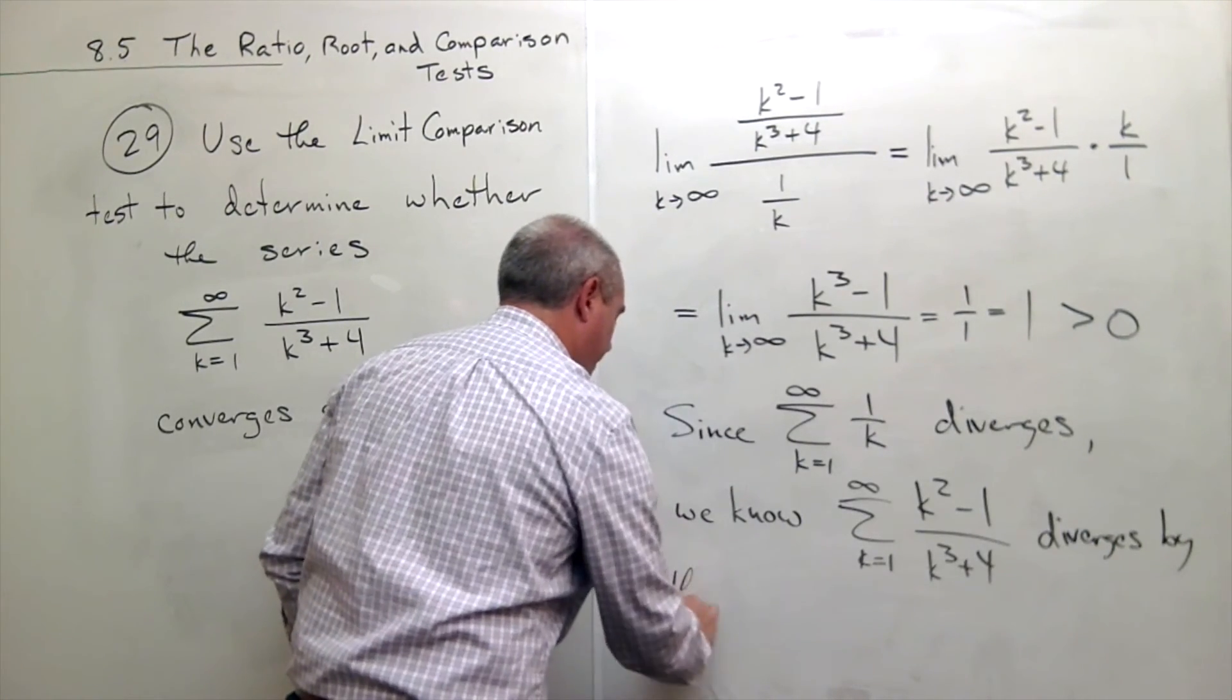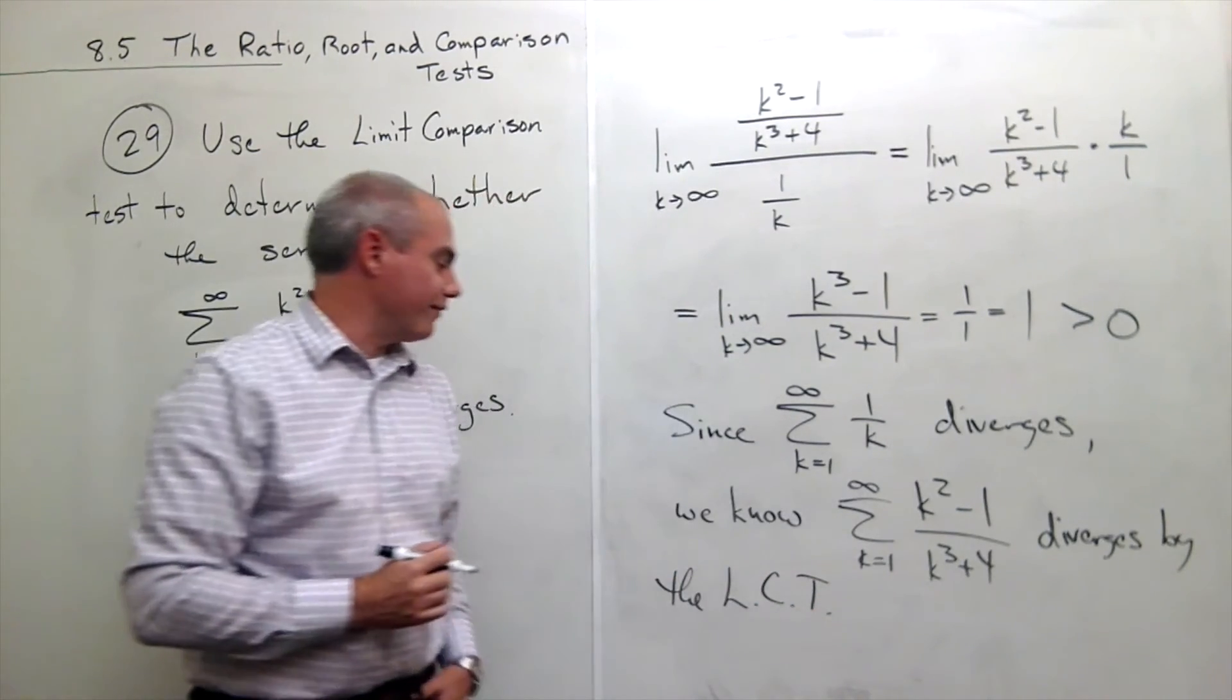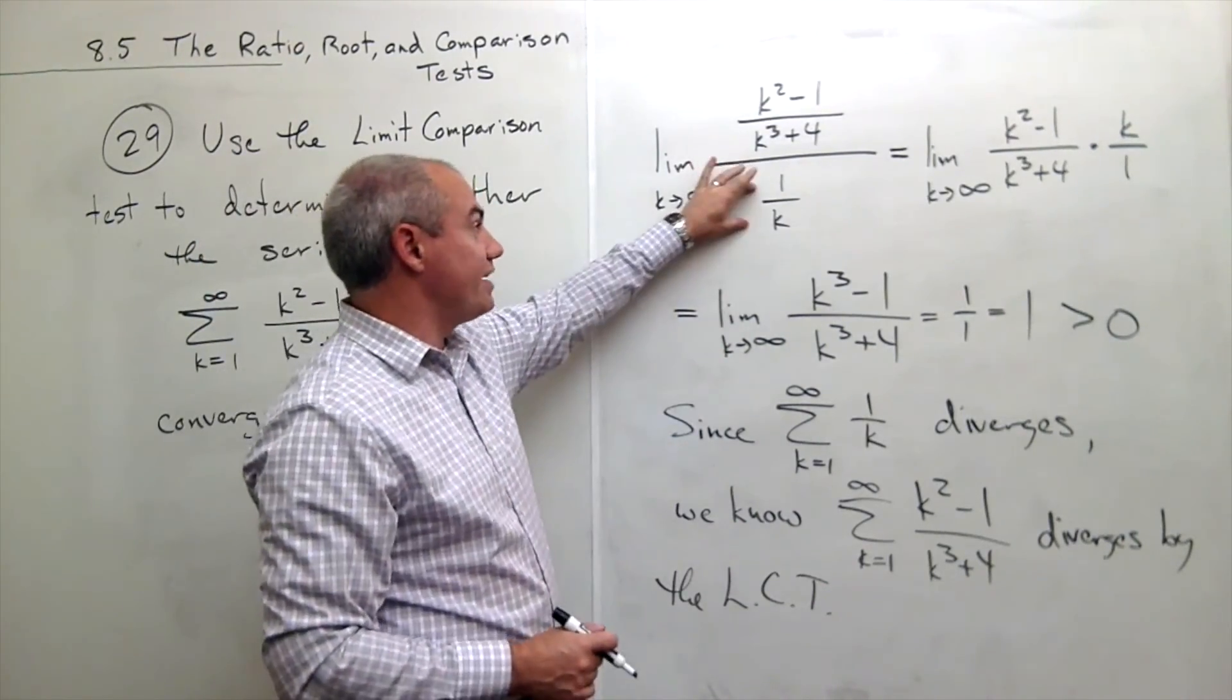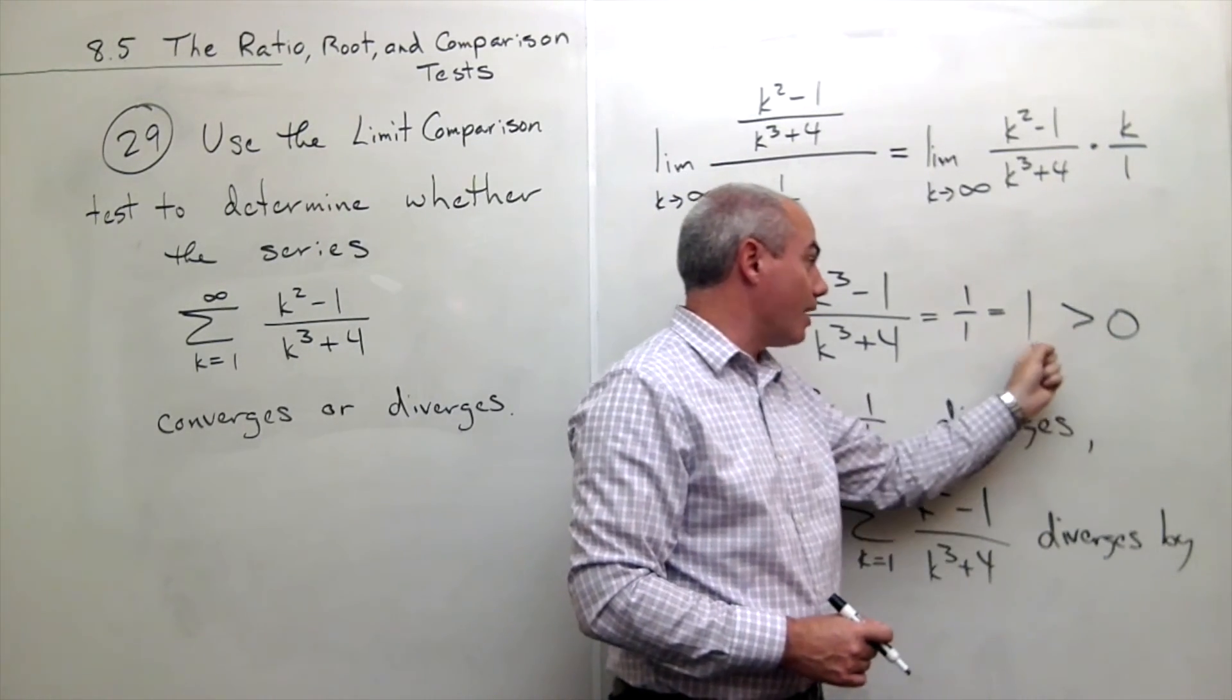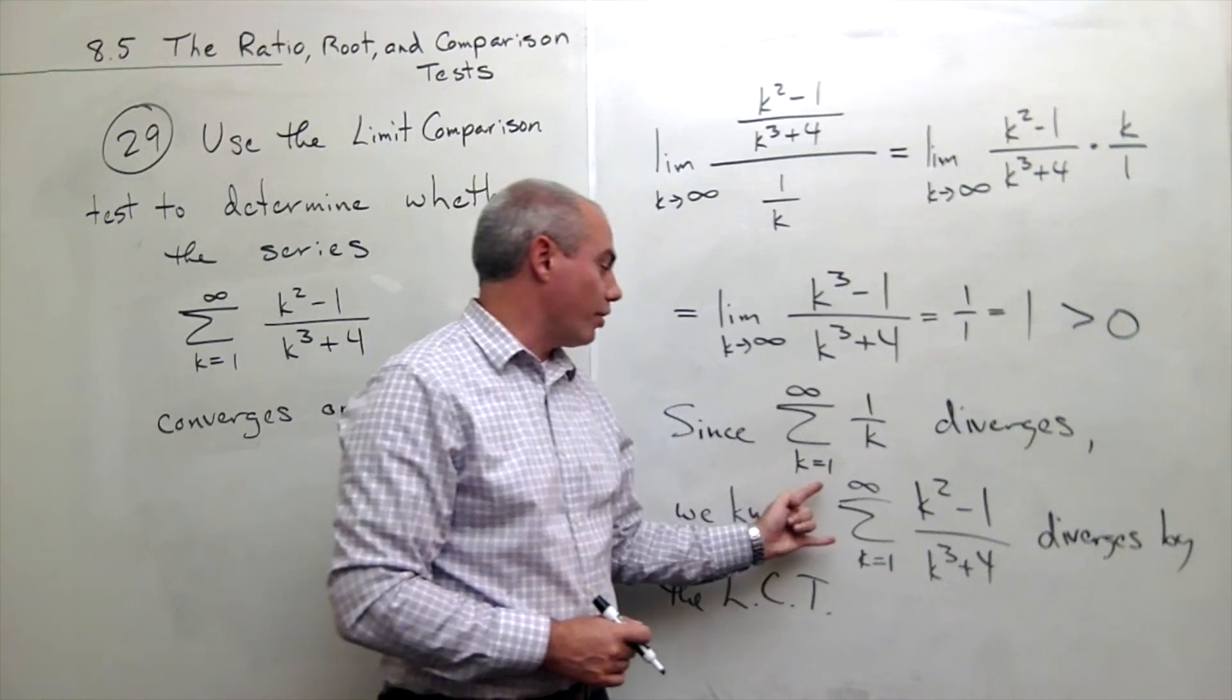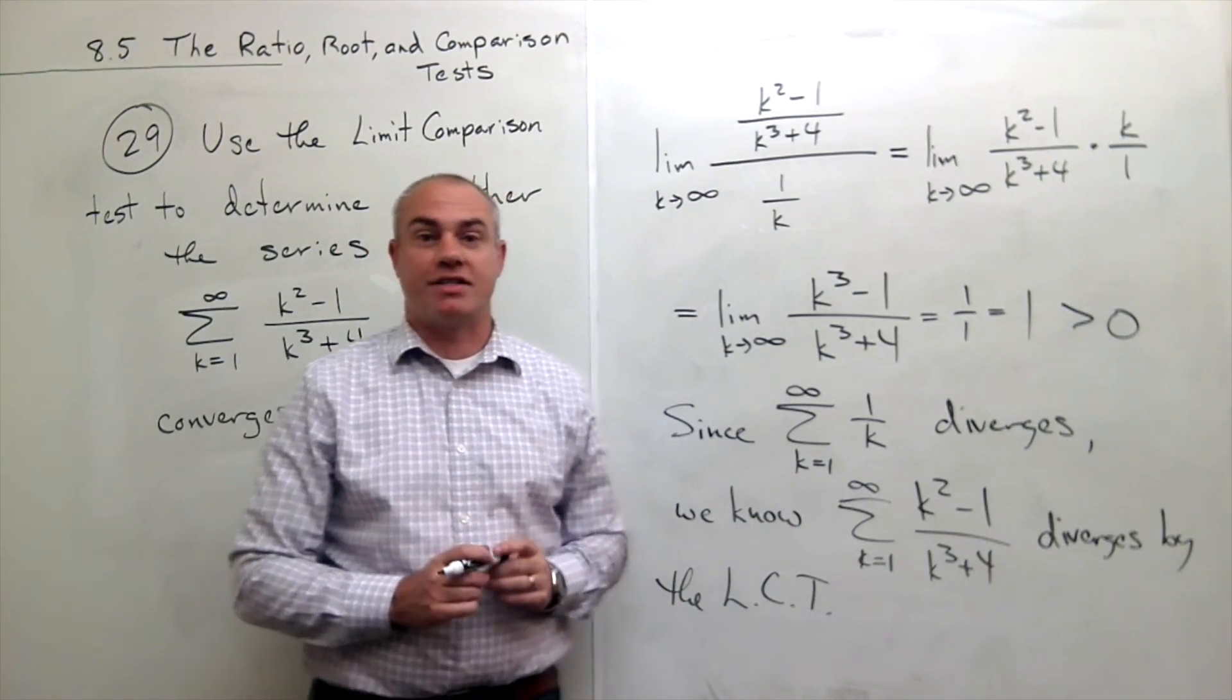By the limit comparison test. And I'll just abbreviate limit comparison test to LCT. So, since we know that this guy diverges and the limit comparison test gave me a number 1 that was bigger than 0, then I can say that since I know this guy diverges, that means we know that this series also diverges by our limit comparison test. And we are done.